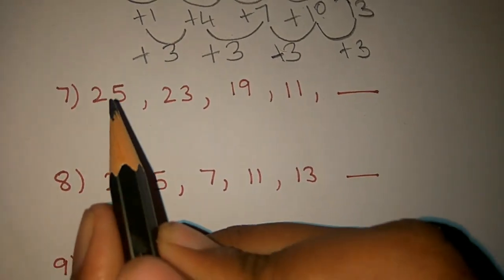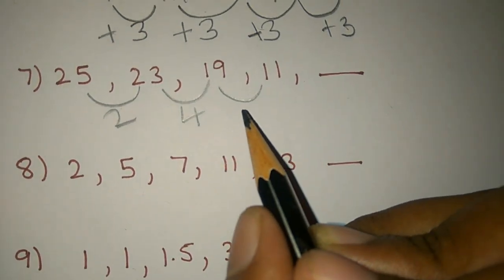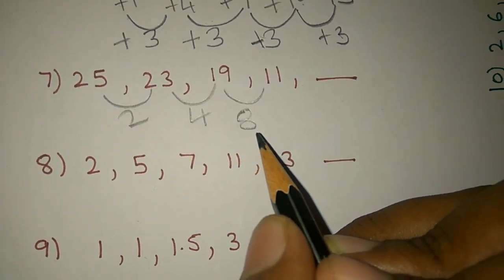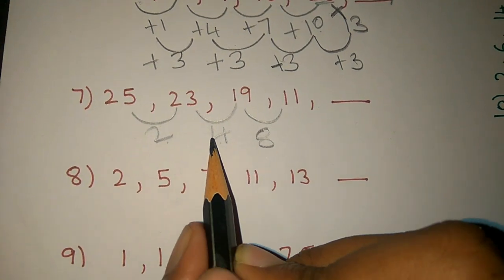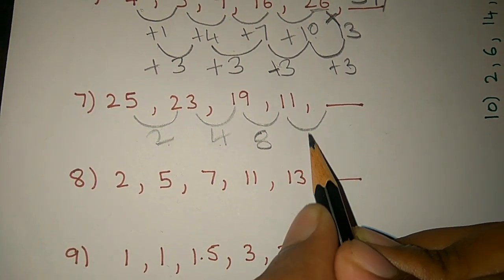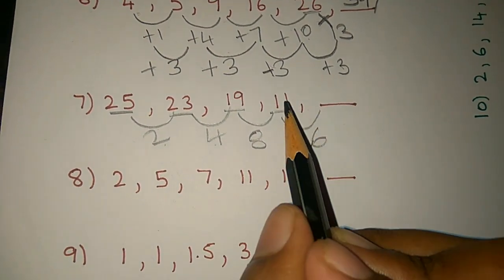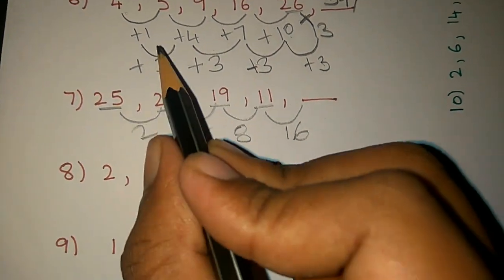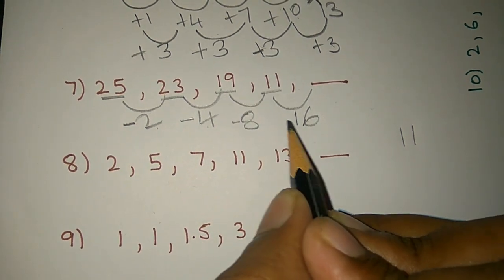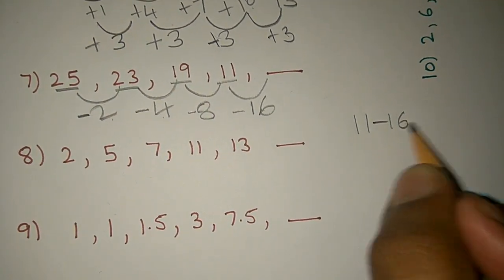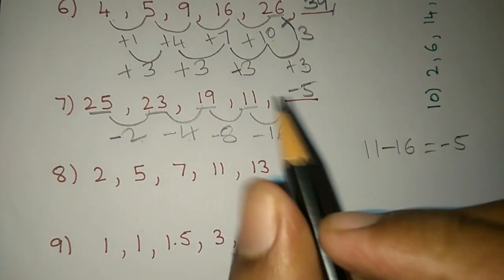Let's see the next one. The differences are 2, 4, 8 — doubling each time: 2×2=4, 4×2=8, so 8×2=16. Now for a term with 11, the difference goes minus, meaning the number decreases. The number becomes less than zero, so the answer is minus 5.